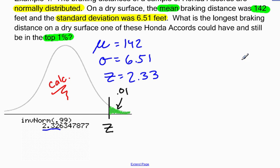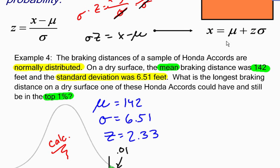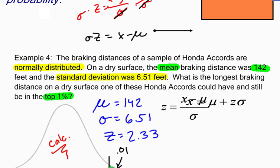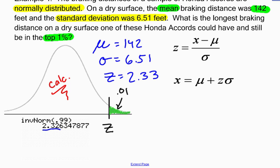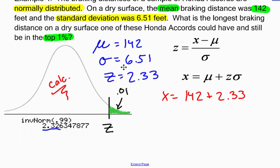All right, now I'm ready to find my value for x. I could plug in all those numbers and do the algebra to solve for x, but I could also use this formula right here that already has been solved for x and just plug in the values that I know. So x is going to be equal to μ, which is 142, plus my z-score, which is 2.33, times my standard deviation, which is 6.51.